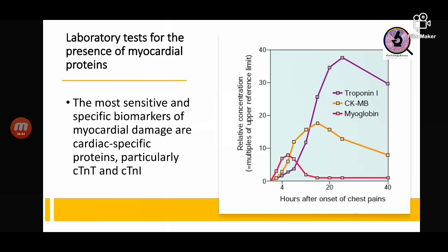Troponin I starts getting raised around 4 hours, peaks after about 20 to 22 hours, and remains high even after that. One important point: in case of re-infarction, CKMB is better than troponin I because troponin I remains elevated for a long time after the first infarction, making it impossible to distinguish between the first infarction and a re-infarction. CKMB goes down after about three to four days and rises again in case of re-infarction.